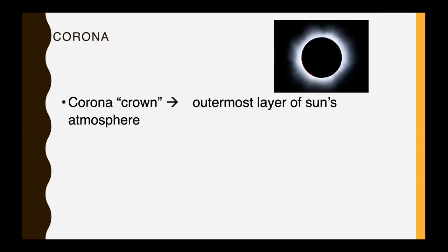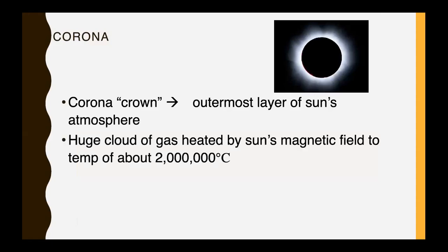And finally, the corona, which is Spanish for crown. It is the outermost layer of the sun's atmosphere. It is a huge cloud of gas that is heated by the sun's magnetic field to 2 million degrees. So this is why I was saying in the core, you have 15 million. Then you cool off to two and a half down to 1 million, 6,000 at the surface. But once you get past the surface and you start getting into the atmosphere, that's where you have a lot of effect from the magnetic fields on the sun.